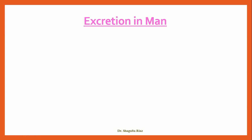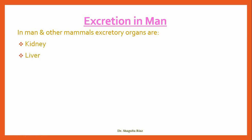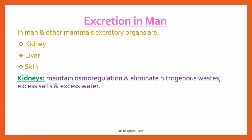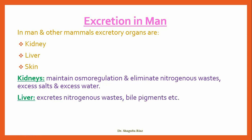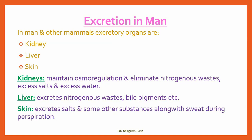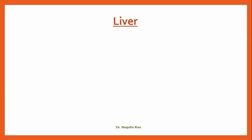Now excretion in men. In men and other mammals, the excretory organs generally consist of the kidneys, liver, and skin. Kidneys maintain osmoregulation and eliminate nitrogenous waste, excess salts, and excess water from the body. The liver excretes nitrogenous waste like bile pigments. The skin excretes salts and some other substances along with sweat during perspiration.